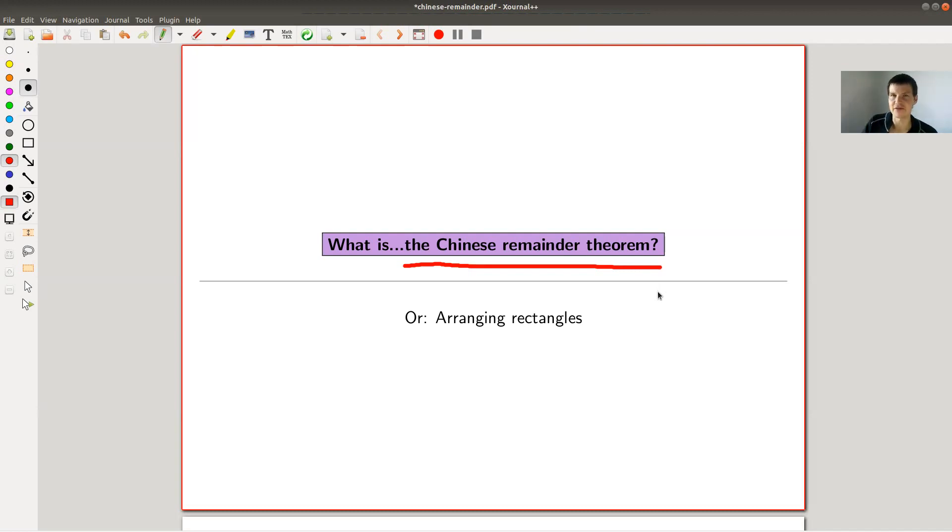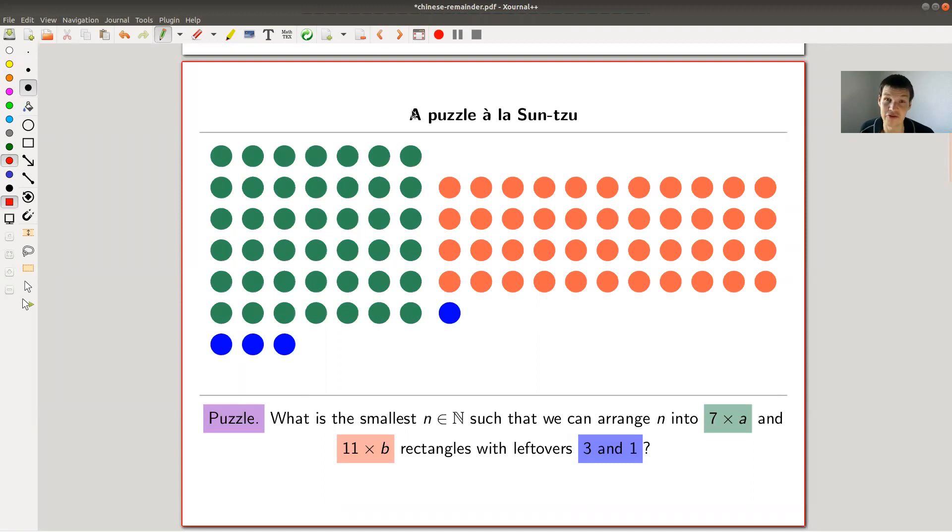So a little bit of history is linked down in the description. And basically, the puzzle goes as follows. This is a variant of the original puzzle. The original puzzle, which is, as I said, the description is a bit more complicated, but it's basically the same. So it goes back to a Chinese mathematician whose name I don't dare to pronounce. I probably messed it up.